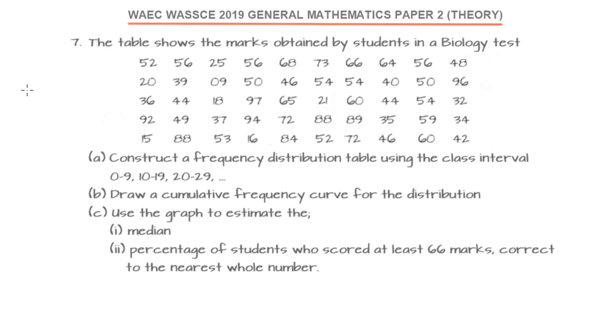We want to get a frequency distribution table. I'll just do a rough sketch here, and I advise this is the best way to go about your work. Have the mark, the tally, and the frequency. For example, we have been given the range 0 to 9. Now we have 9, that's the first 9 we are seeing, and there is no other one. The frequency therefore is 1.